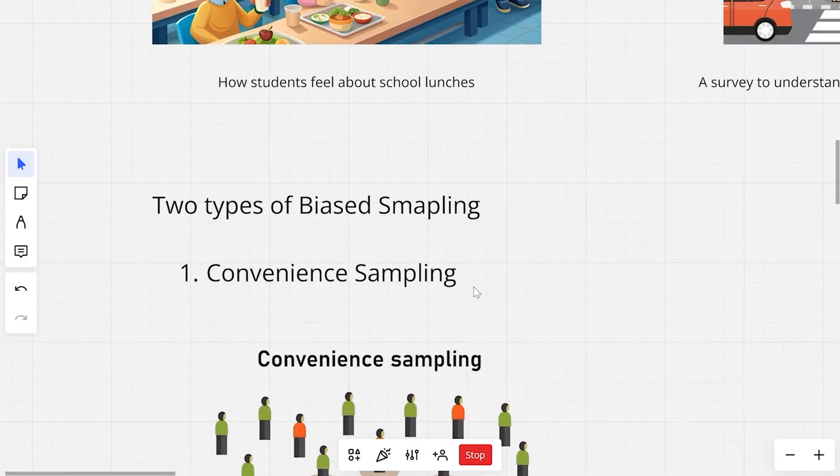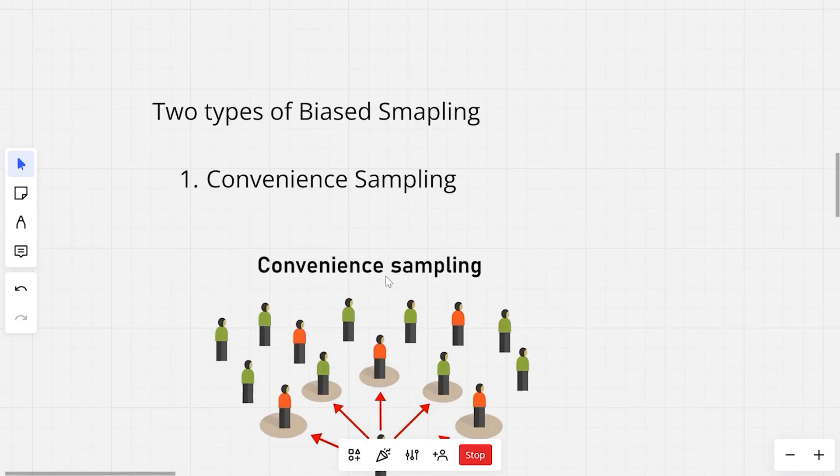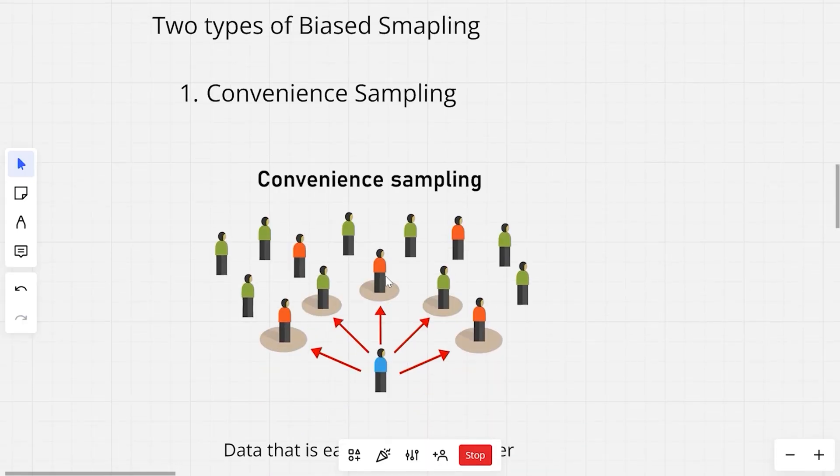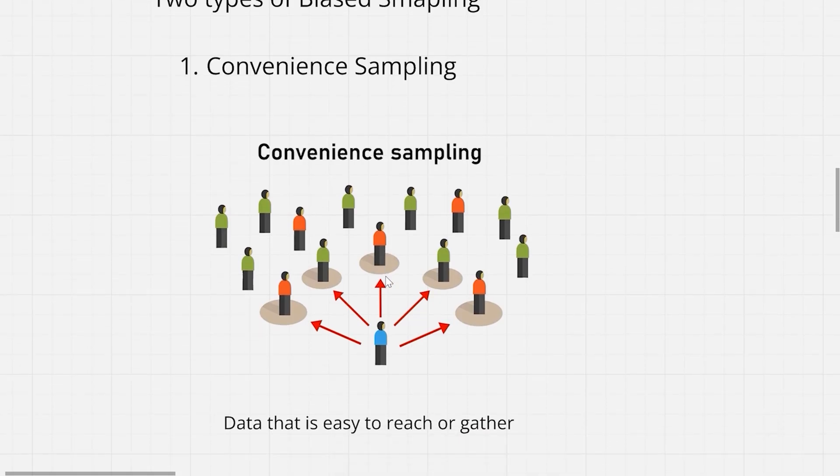We have two types of biased sampling methods. First one is convenient sampling. Convenient sampling is when you gather data from people or things that are easy to reach. It's simple and quick, but it's often not very accurate because it does not represent the entire population. In our previous example where we were trying to gather the opinions of students about school lunches, if we ask only the people sitting at our table, that would be an example of convenient sampling. They are easy to reach and easy to get their opinions from.